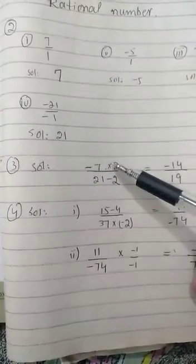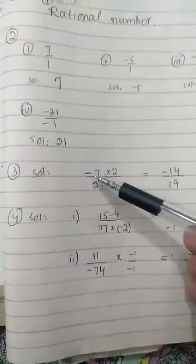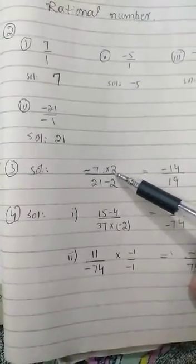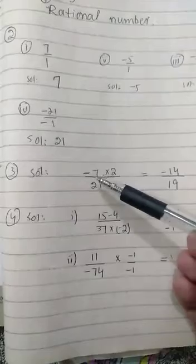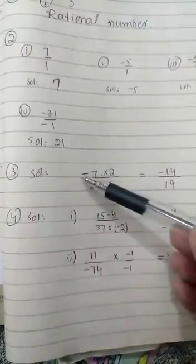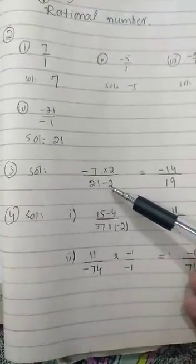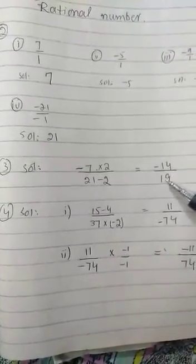After writing numerator and denominator, you just have to find out the answer. 7 multiply 2 is 14, and then there is minus here and plus with 2, so minus into plus is minus. So minus 14, and then 21 minus 2 is 19. So this is the answer.